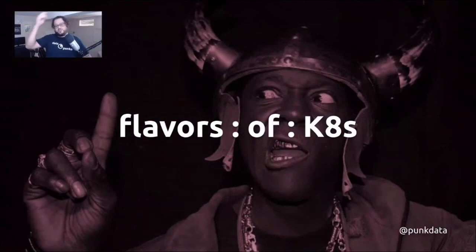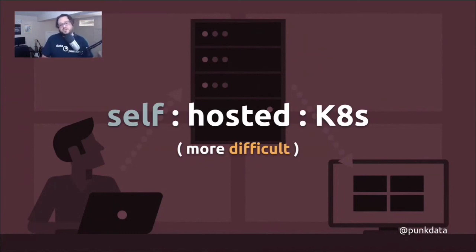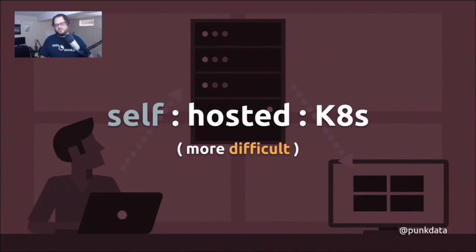With Kubernetes there are two flavors. The first is self-hosted, which pertains to deploying Kubernetes on-premises in a data center — relevant for companies like government agencies or financial organizations that can't put infrastructure in the cloud due to regulation. Self-hosted is more difficult because you have to manage everything — networking through to hardware and memory. It's also more expensive because you need skilled humans to implement, maintain, and configure it.